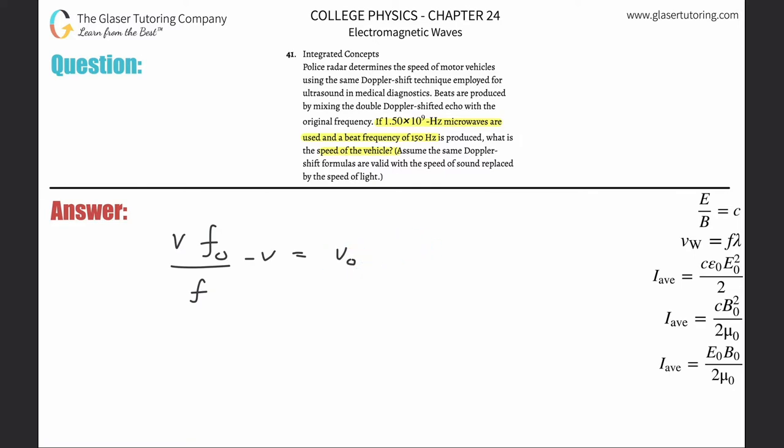We can factor out the v if you wanted. This is f sub o over f minus one that's equal to v sub o. So the v here, that was the velocity of the wave.